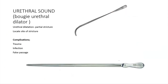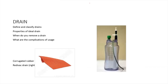The urethral sound, urethral bougie, or urethral dilator is used for dilatation of partial urethral stricture — usually serial dilatation — and to locate the site of a urethral stricture. Complications of use include trauma, urethral trauma, infection, and false passage.